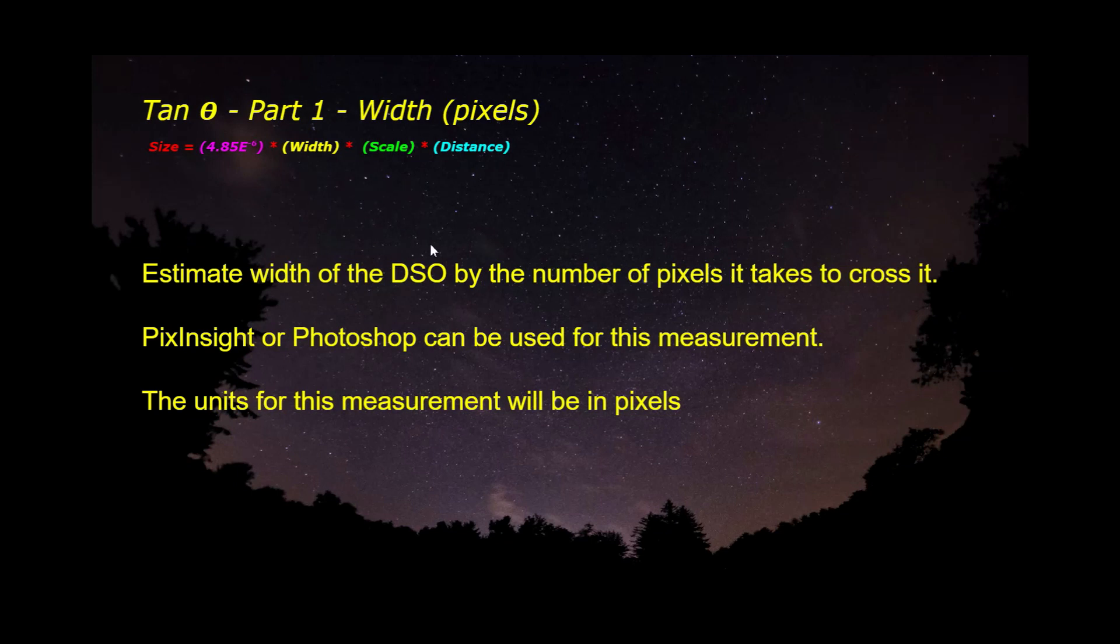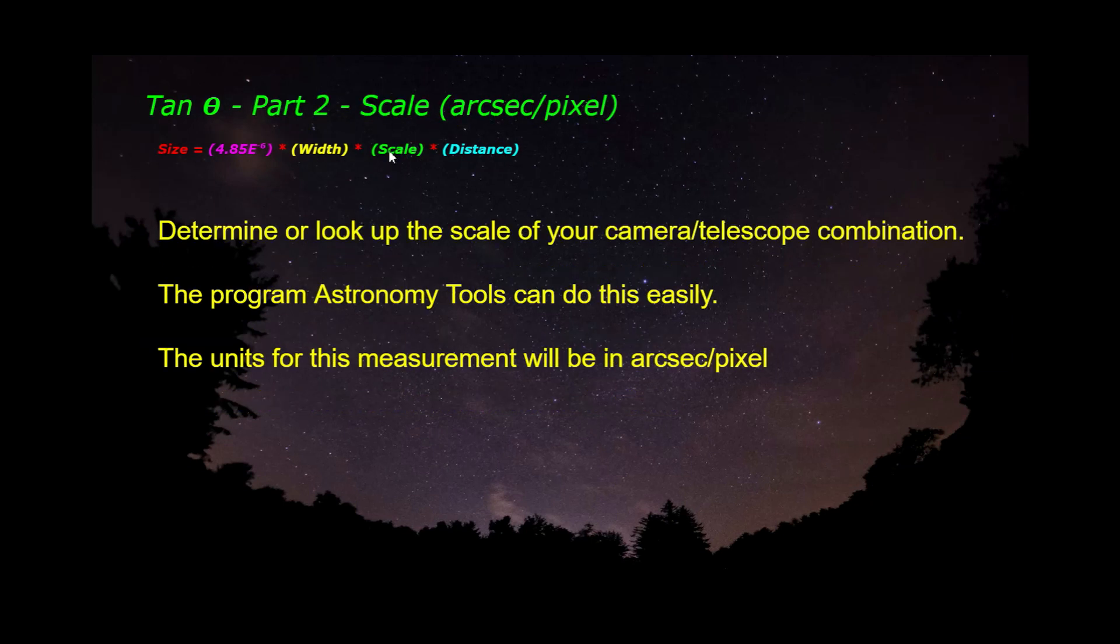Alright, let's take a look at the width. Now, the width of the deep sky object, that's the number of pixels it takes to cross it. Now, I use PixInsight or Photoshop. It can be used for this measurement. And I'll show you how I do it in Photoshop. And again, the units are going to be in pixels.